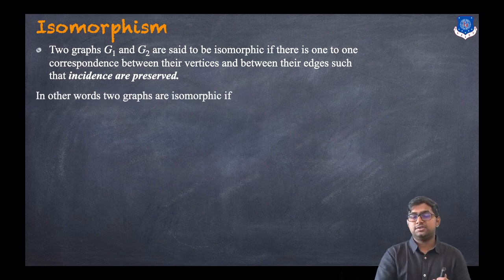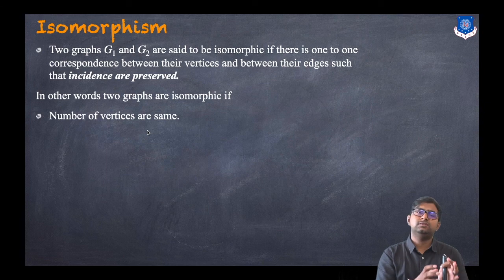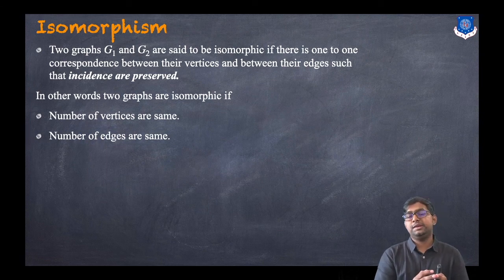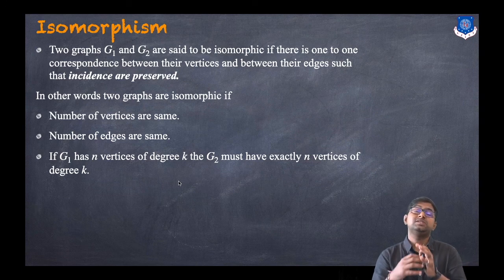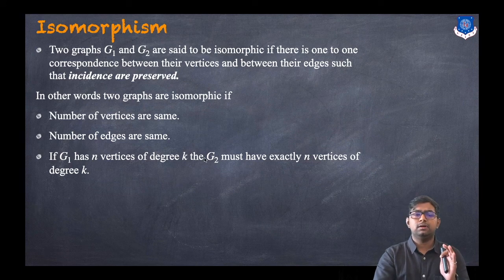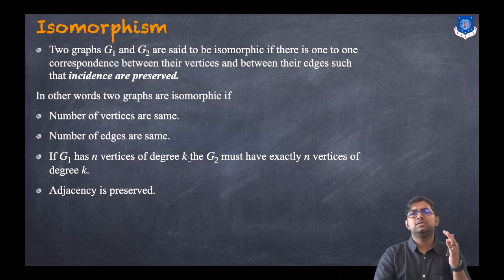In other words, two graphs are isomorphic if these conditions hold: first, the number of vertices has to be the same; second, the number of edges has to be the same; third, if graph G1 has n vertices of degree k then G2 must have exactly n vertices of degree k; and lastly, adjacency or incidences are preserved. If all these conditions are satisfied, we can say the two graphs are isomorphic.